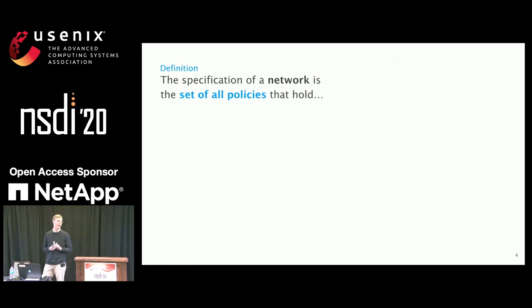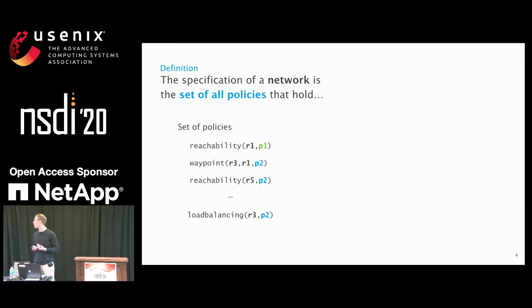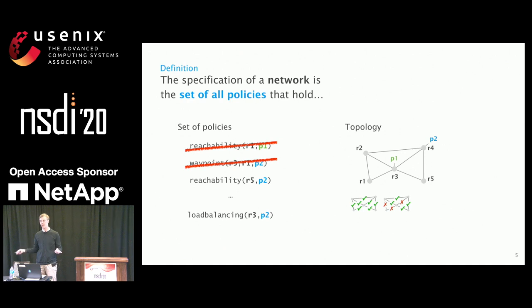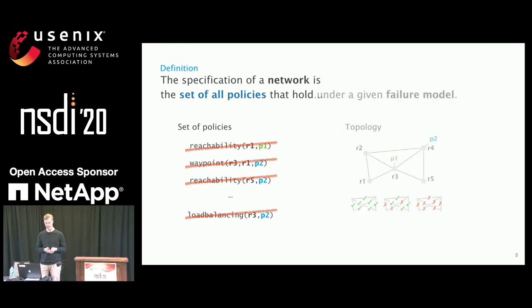The specification is a description of the behavior of your system. For a network, it could be the set of all policies that hold in your network. But what does it mean for a policy to hold in your network? When all links are up, probably these policies hold. If something fails, not all policies can hold anymore. And if all links fail, almost no policies hold. So the set of all policies alone is not enough — we also need a context under which these policies need to hold.